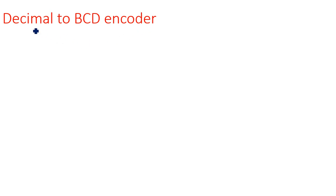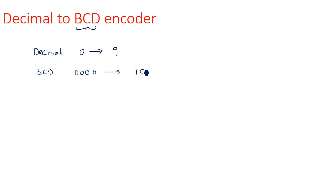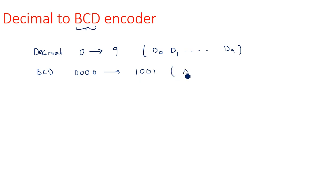In the decimal to BCD encoder, the decimal number consists of 0 to 9 only, because the other end is BCD. The corresponding BCD number varies from four zeros (0000) to 1001, which is the highest number in Binary Coded Decimal. So the input decimal numbers are D0 through D9 — total 10 inputs — and the outputs are only four bits: A, B, C, D, because four bits are needed in BCD to represent nine.